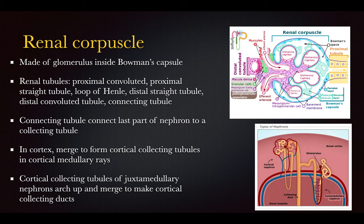The renal corpuscle is inside Bowman's capsule, and within that there are renal tubules: the proximal convoluted tubule, the proximal straight tubule, part of the loop of Henle, the distal straight tubule, the distal convoluted tubule, and the connecting tubule. There is a basement membrane, and within it is Bowman's space, where there is exchange of water and material such as proteins.